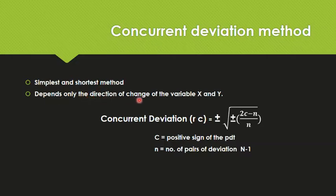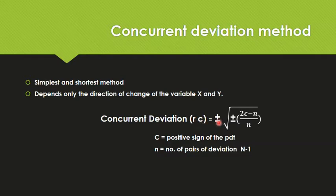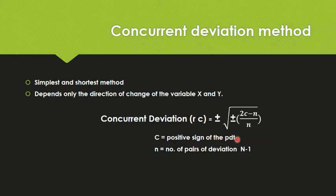It depends only on the direction of change of the variables x and y. The Concurrent Deviation Coefficient, that is Rc, is equal to plus or minus the square root of plus or minus (2c minus n) divided by n, where c is the number of positive signs of the product, and n is the number of pairs of deviation, calculated by the formula N minus 1.